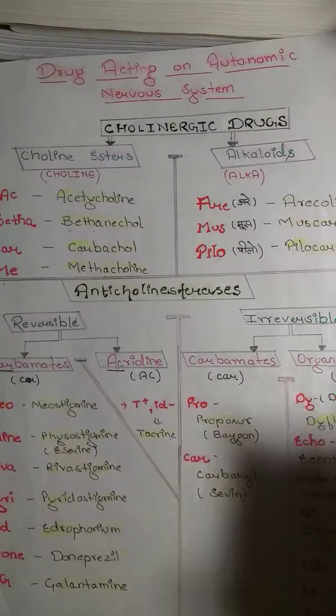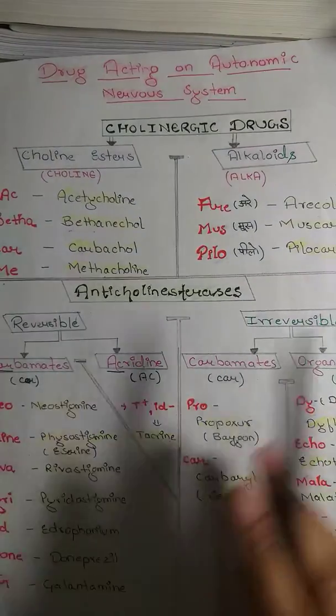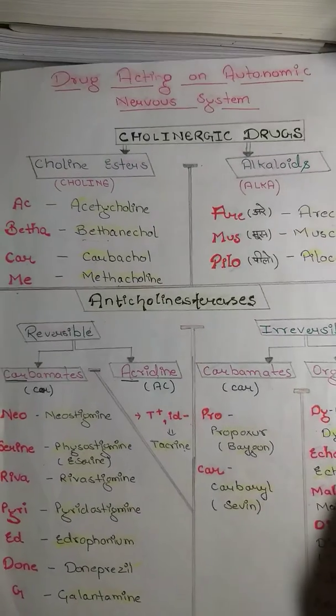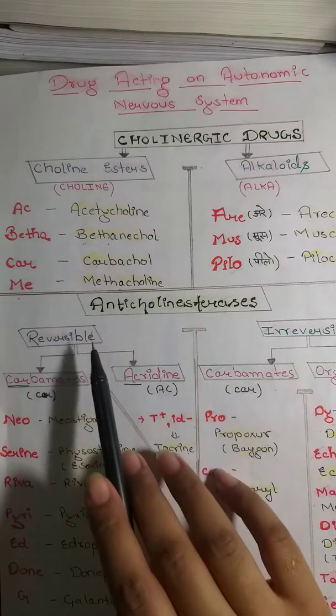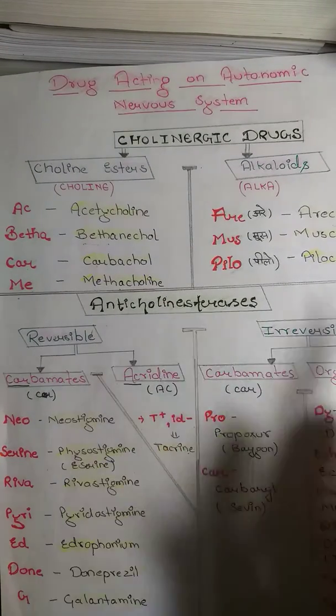Our second classification is anticholinesterases. Anticholinesterases is divided into two parts: reversible and irreversible.